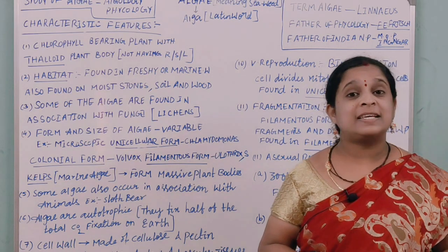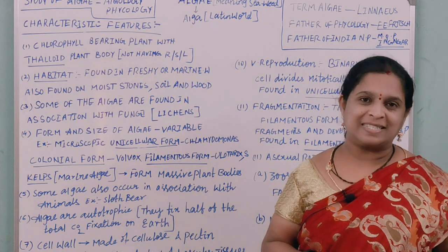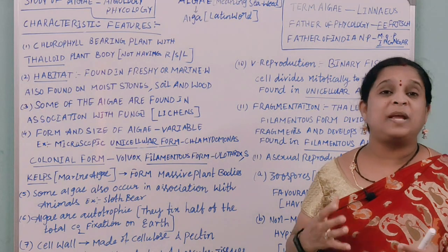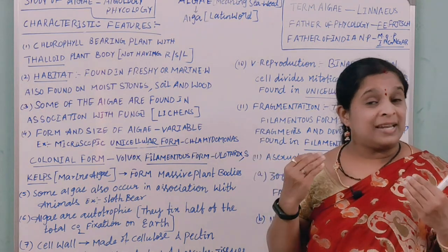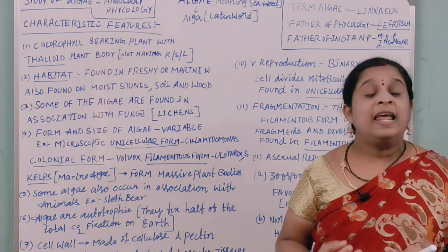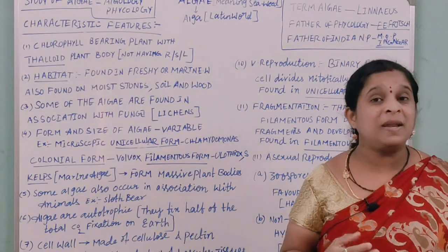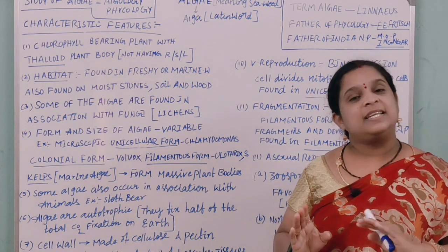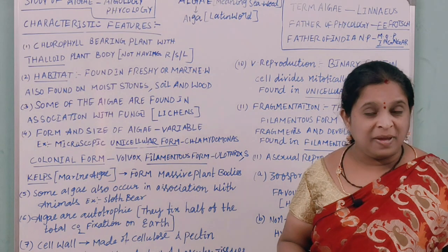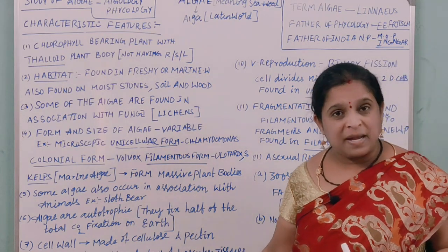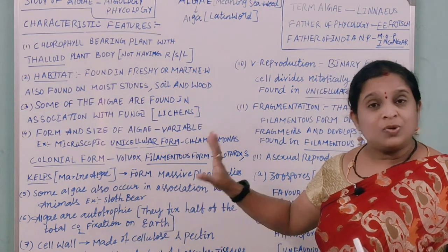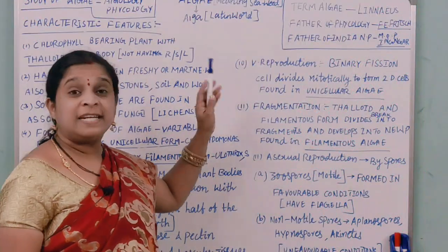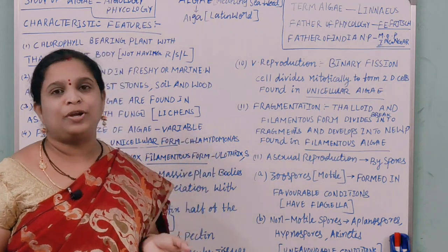The classification of algae is based on pigments. We know algae contain chlorophyll, but we need to know which specific pigments are present — such as chlorophyll-a, beta-carotene, or chlorophyll-b. These chlorophylls and carotenoids are the universal pigments present in algae.